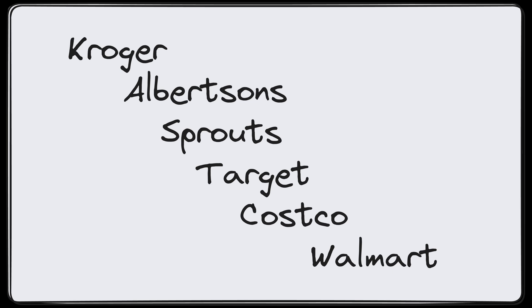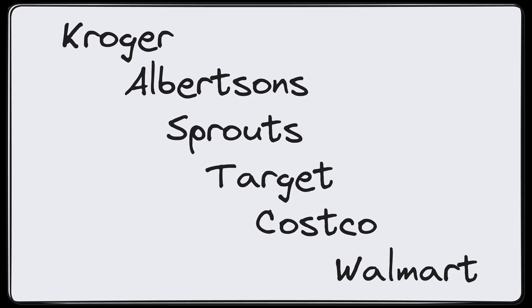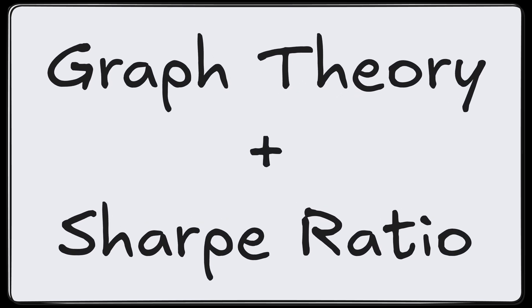So I want you to think of things like Kroger, Albertsons, Sprouts, Target, Walmart, Costco, stuff like that. Our model is a slight variation on the graph theory and Sharpe ratio based model we used in the very first video on this channel.